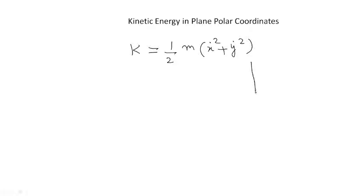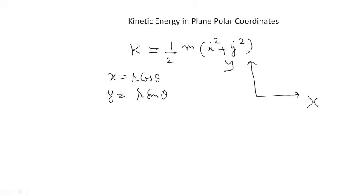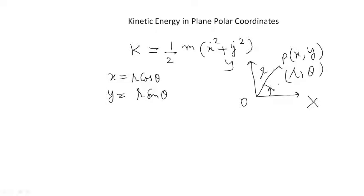The plane polar coordinates can be expressed in terms of x and y as: x is equal to r cos theta and y is equal to r sin theta. This is your x-axis, this is your y-axis, and suppose there is a point P in the Cartesian coordinate system — it will have coordinates x and y. In the polar coordinate system, it will have coordinates r and theta. This is your r and this is your theta.